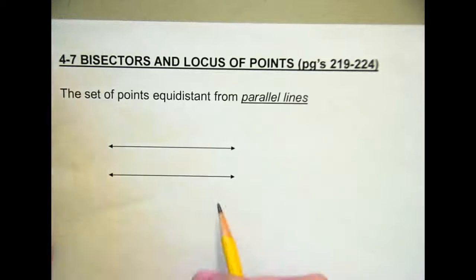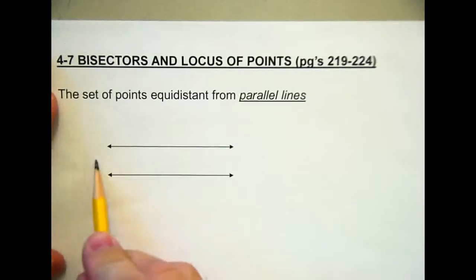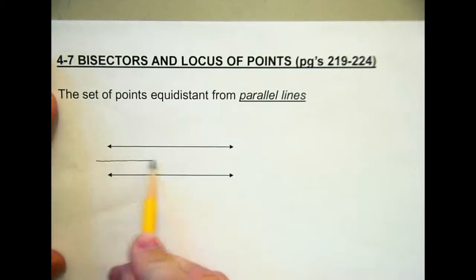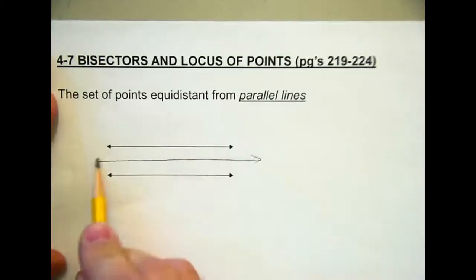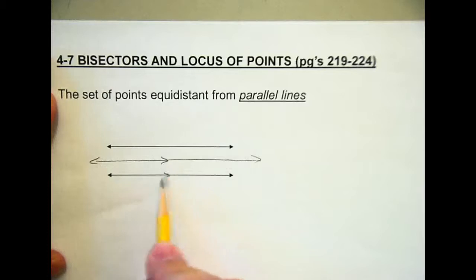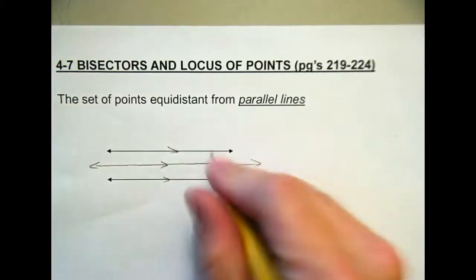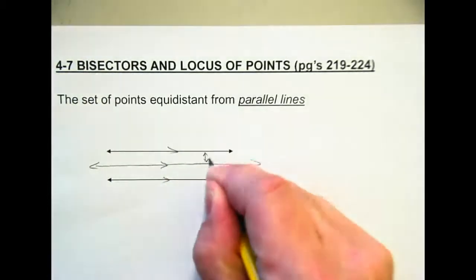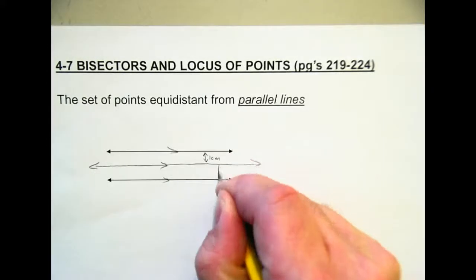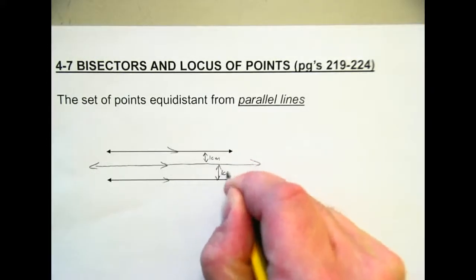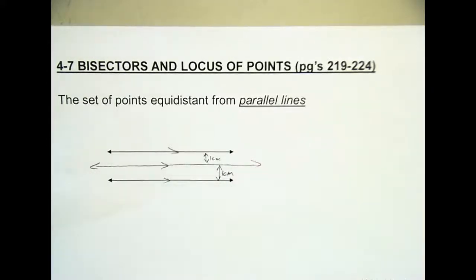A parallel line that runs right in the middle — a line that's parallel and runs right through the middle. Very good. All three of those are parallel. It has to be equidistant from both. So if this is one centimeter, this would be one centimeter. And notice since it's a line, it has to be a line.